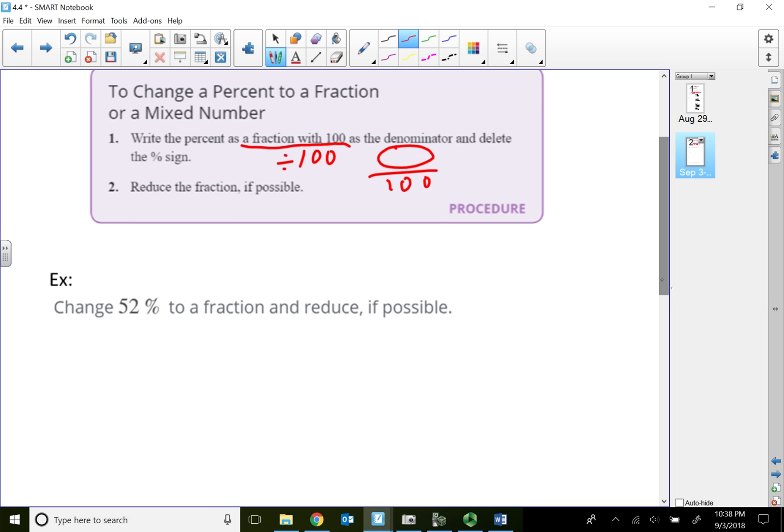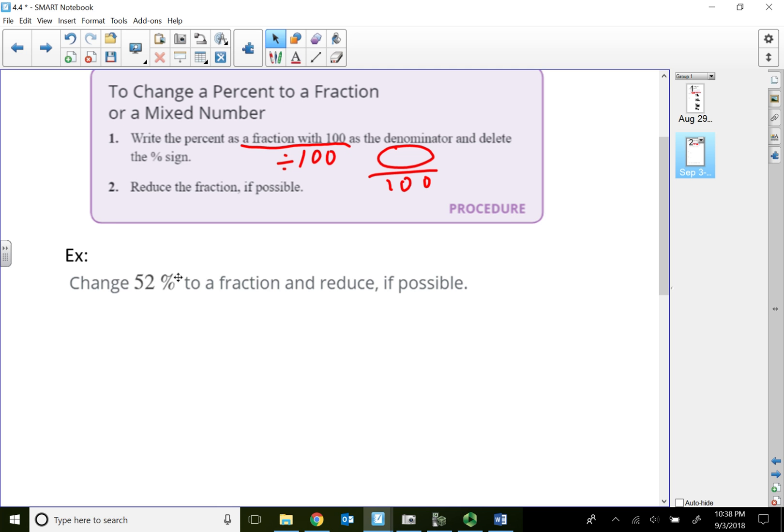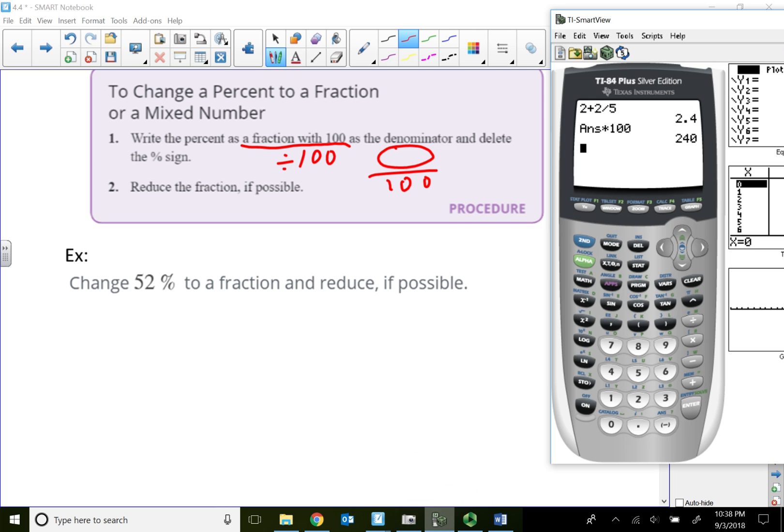I'm going to show you how to do this in the calculator. So it's basically the same thing as we would do it by hand. It just calculates. The steps do not change. For example, 52 percent.